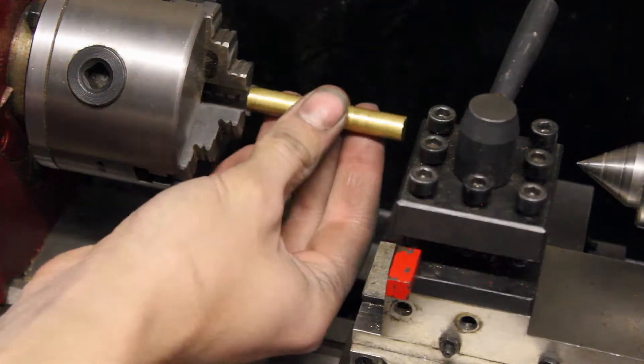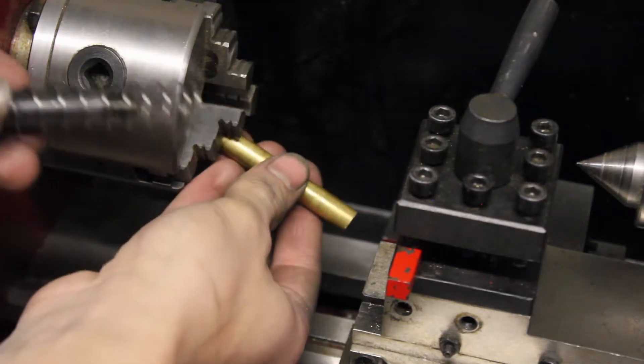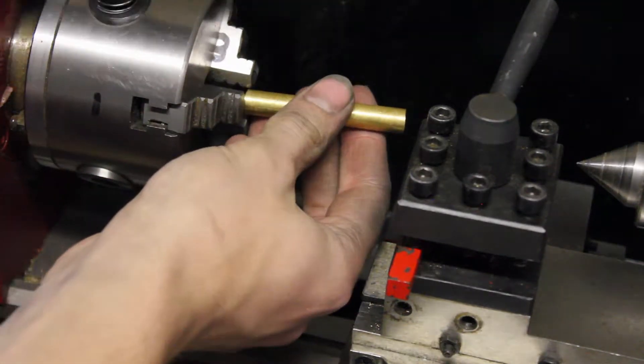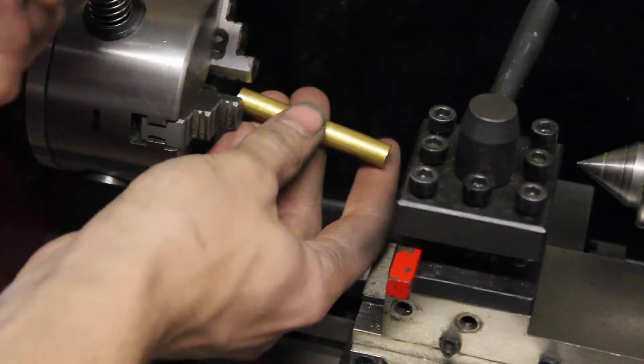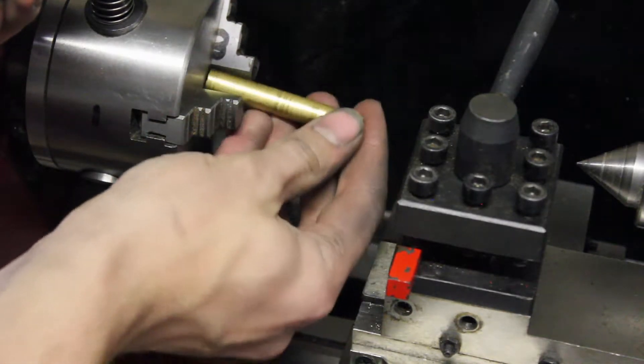So in order to get the piece of stock into the chuck, you need the chuck key, which goes into one of these spots on the chuck. And if you loosen it, then it opens these jaws up so you can fit your part in.